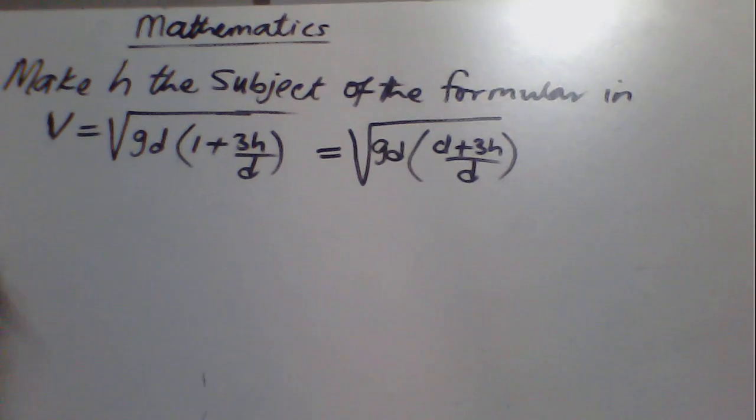Alright, let's continue. From here, you have gd squared plus 3gdh divided by d. The next thing to do is to square both sides of the equation. You are required to make h the subject of the formula, so square both sides of the equation.